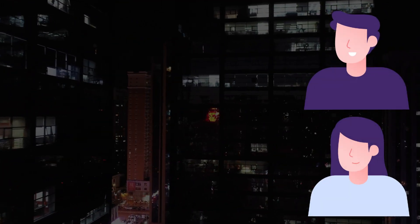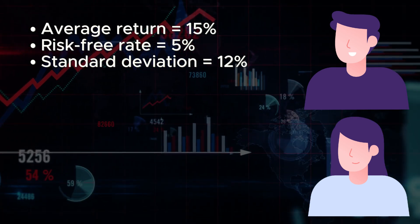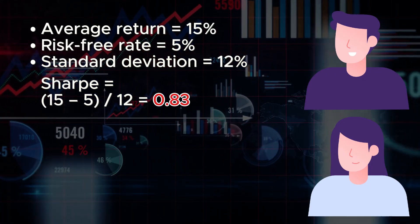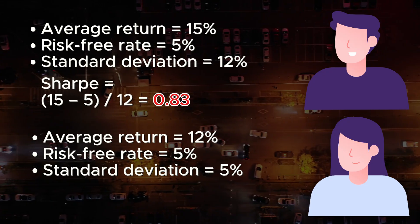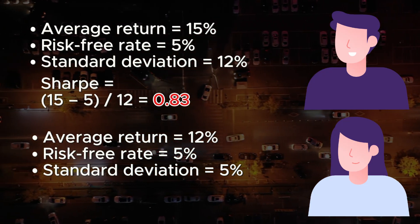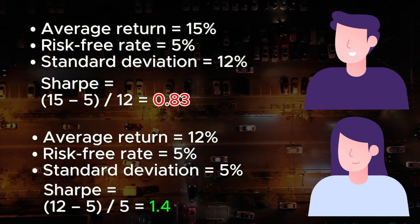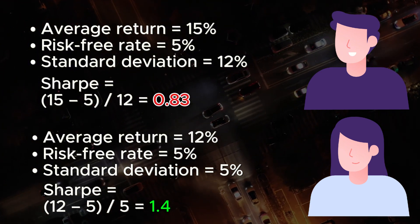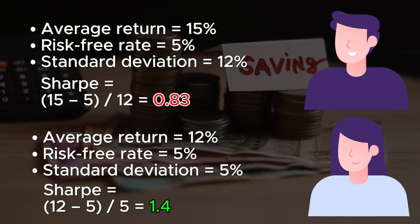Let's look at an example. Here are two traders, Bob and Alice. Bob's portfolio has an average return of 15%, a risk-free rate of 5%, and a standard deviation of 12%. Subtracting 5 from 15 and dividing by 12 gives a Sharpe Ratio of 0.83 — not terrible, but kind of bumpy. Now Alice's portfolio has an average return of 12%, the same risk-free rate of 5%, and a standard deviation of 5%. Subtracting 5 from 12 and dividing by 5 gives her a Sharpe Ratio of 1.4. Alice has a much higher Sharpe — she is getting more return with much less risk. Even though Bob earns more on paper, Alice is the better risk-adjusted performer.